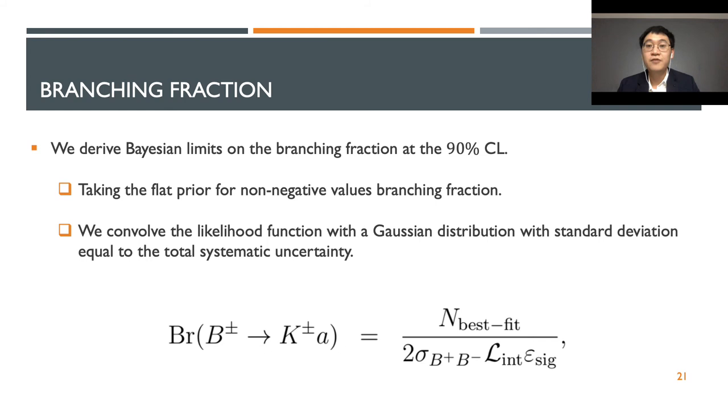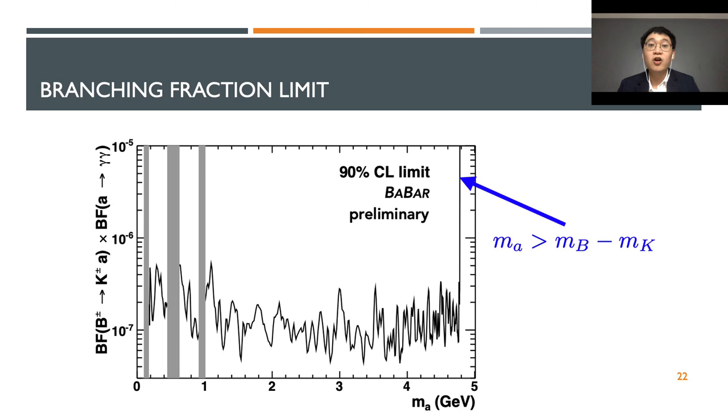So without any significant signal, we derive the branching fraction at 90% confidence level using Bayesian limit. We take a flat prior for the non-negative value of the branching fraction and then convolve the likelihood function with the Gaussian distribution where we take the systematic uncertainty as the standard deviation. As you can see in the figure, we get a very strong limit in the branching fraction for many masses which is below 10 to minus 7. We exceed our expectation of 10 to minus 6 as I showed earlier. For your perspective, this is a very powerful constraint for axion-like particles.